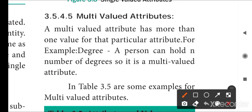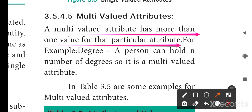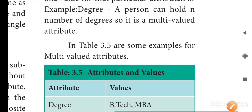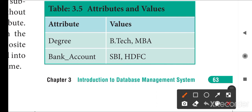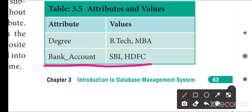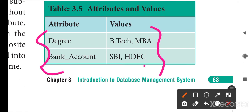Multivalued attribute is the opposite of single valued attribute. A multivalued attribute has more than one value for that particular attribute. For example, 'degree' — a person can hold multiple degrees. Also, a person can have more than one bank account. These are perfect examples of multivalued attributes.